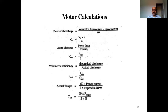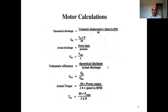The actual discharge is calculated from the power input to power output ratio. Q actual equals the power input ratio. Once you have the theoretical discharge and actual discharge, you can calculate volumetric efficiency, which is the ratio of Q theoretical to Q actual. Multiply by 100 to get the percentage.